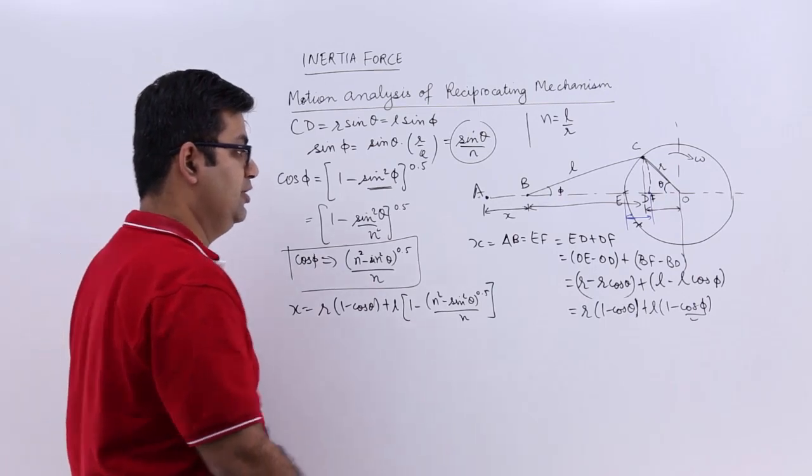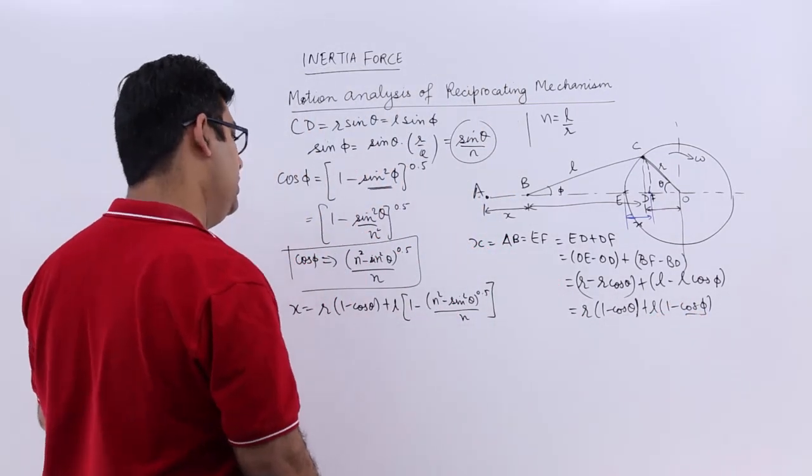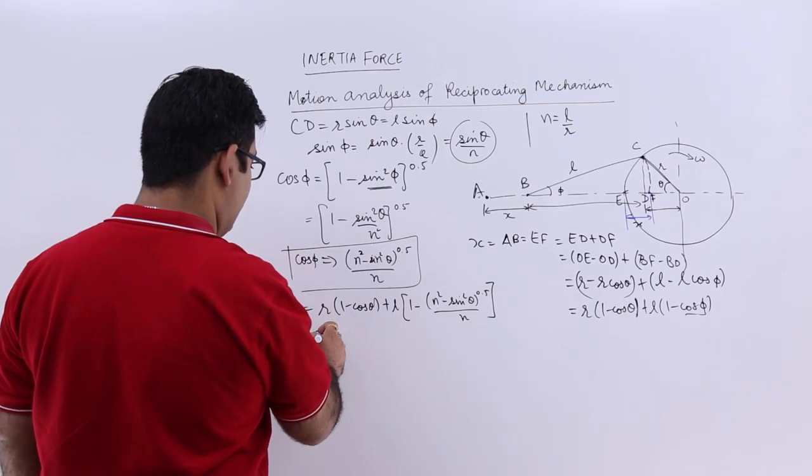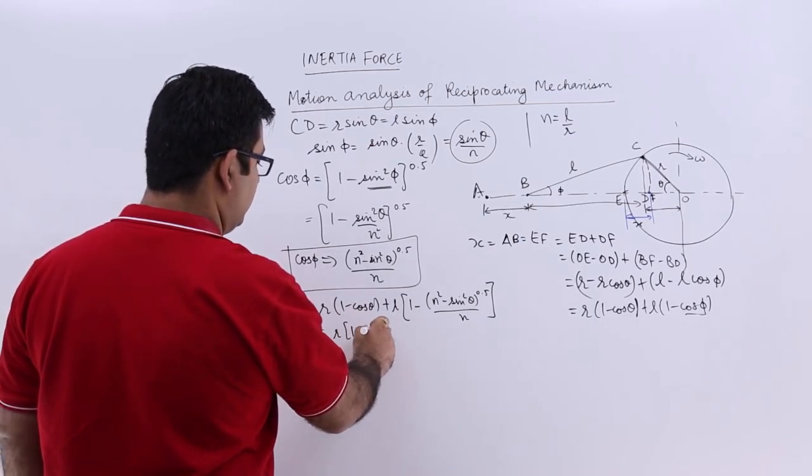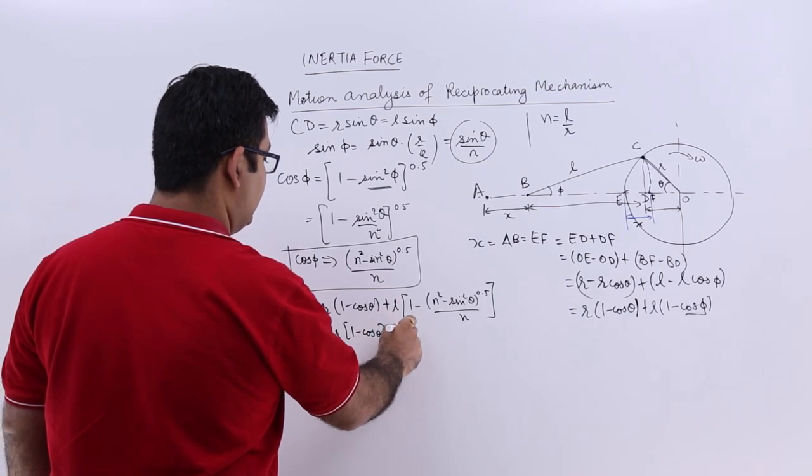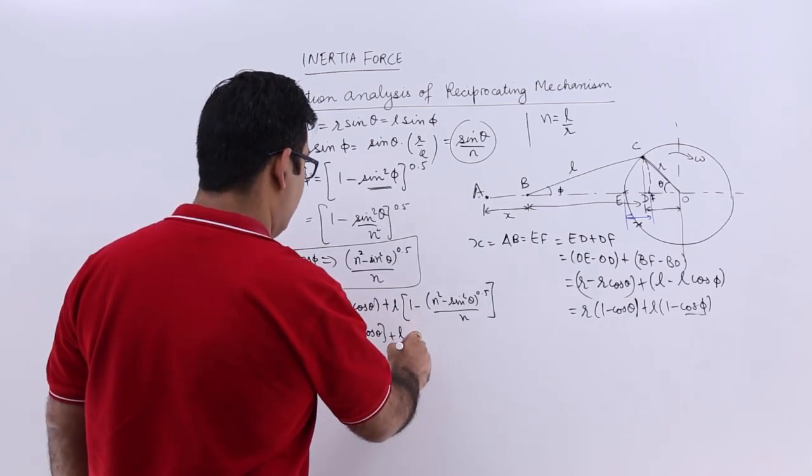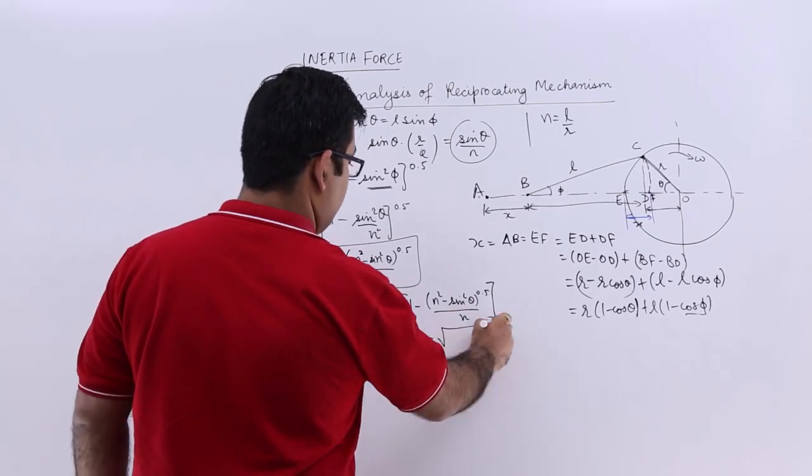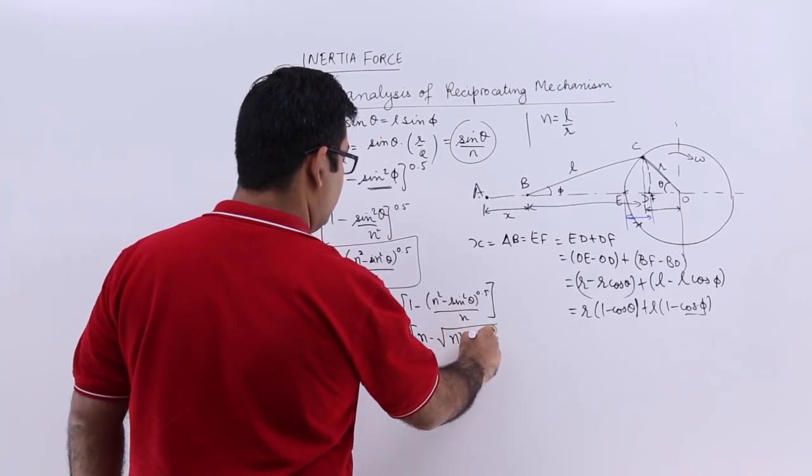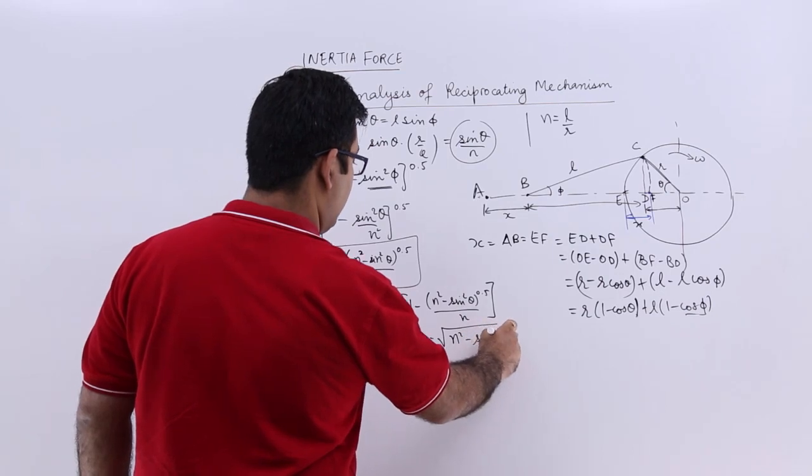This is cos phi. Now this can be further simplified as R into 1 minus cos theta plus L upon N into N minus square root of N square minus sin square theta.